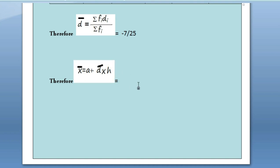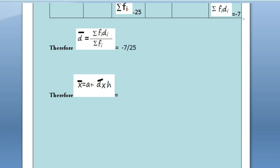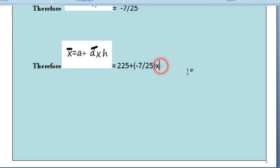d̄ equals minus 7 by 25. And x̄ equals a plus d̄ times h, as we have divided by h in the table, so we have to multiply it by h in the formula. 225 plus minus 7 by 25 times 50 equals 211. Therefore, the mean daily expenditure is 211.